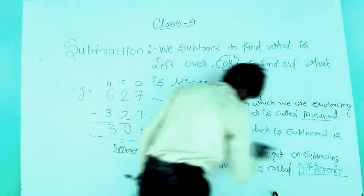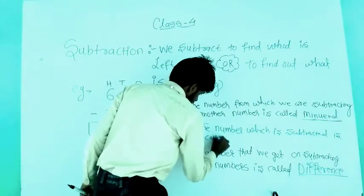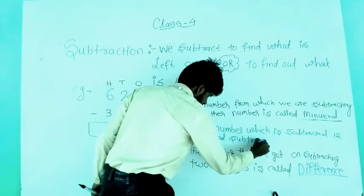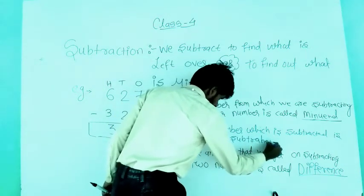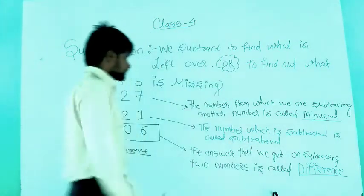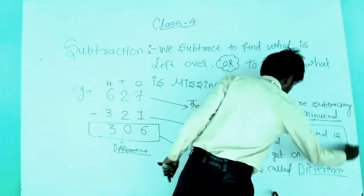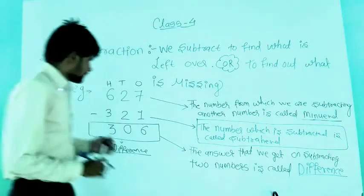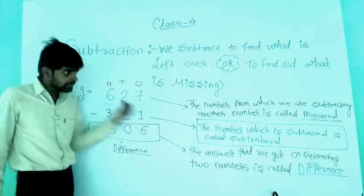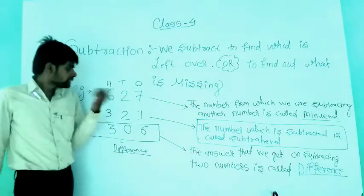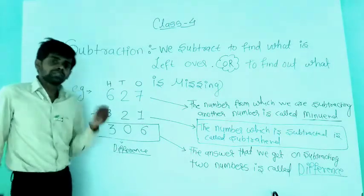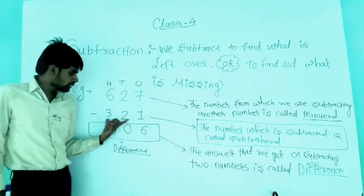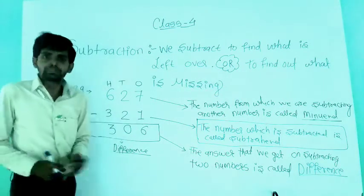The number which is subtracted is called the subtrahend. So to summarize: the number from which we subtract is the minuend; the number which is subtracted is the subtrahend; and the answer of subtraction is the difference.